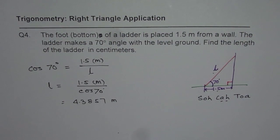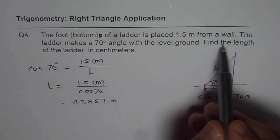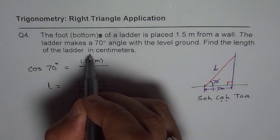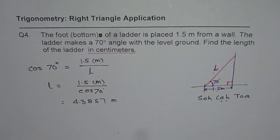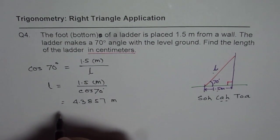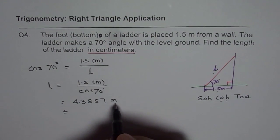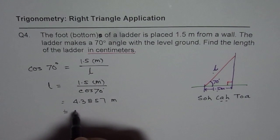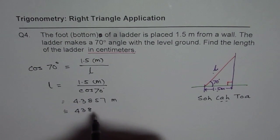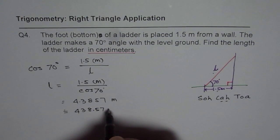Now read the question carefully. It says find the length of the ladder in centimeters. Now these are small things, if you overlook you lose a lot of marks. So in centimeters means we will multiply this by 100. So we will say 4.3857 centimeters.